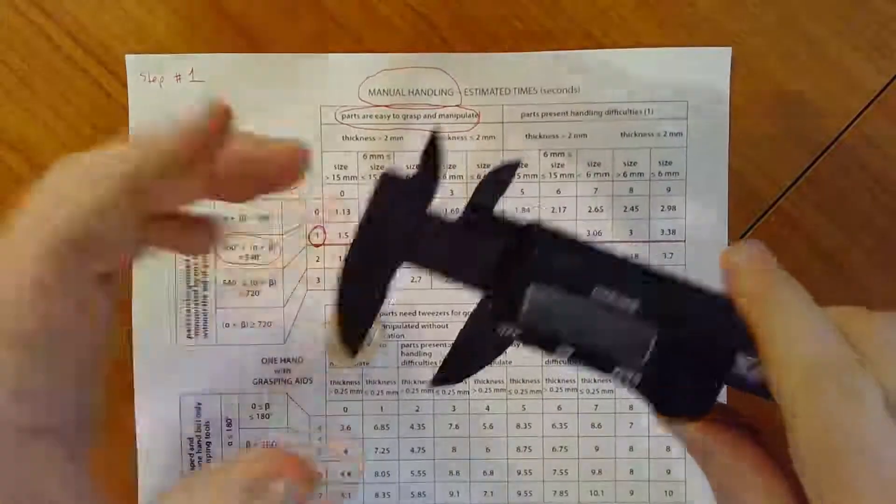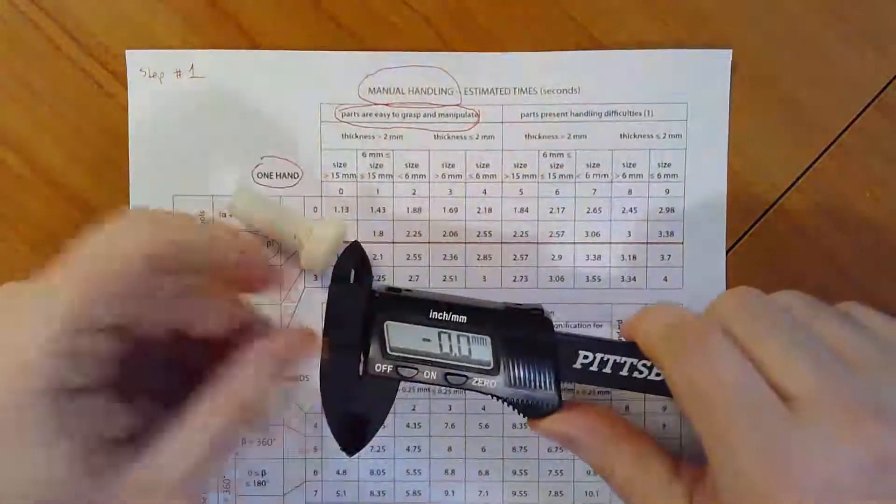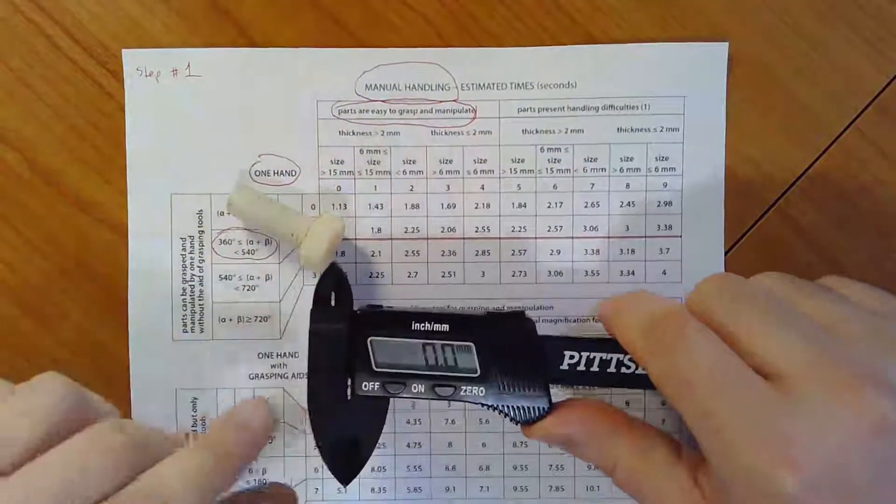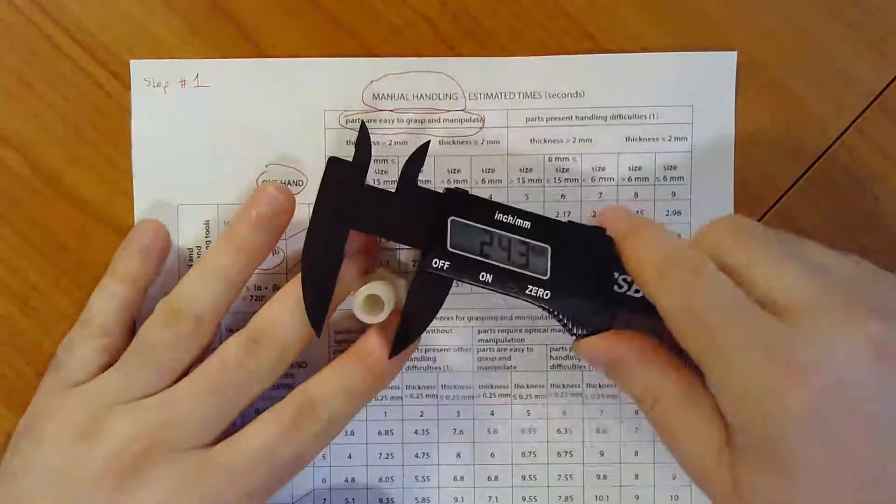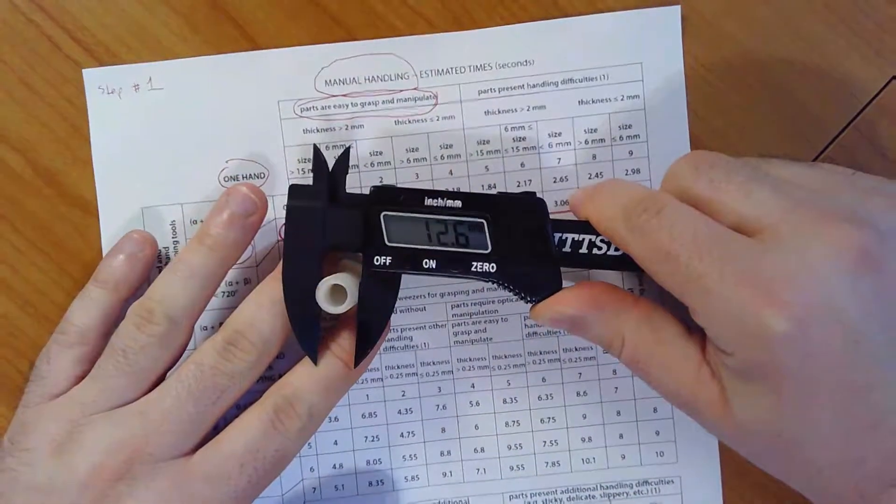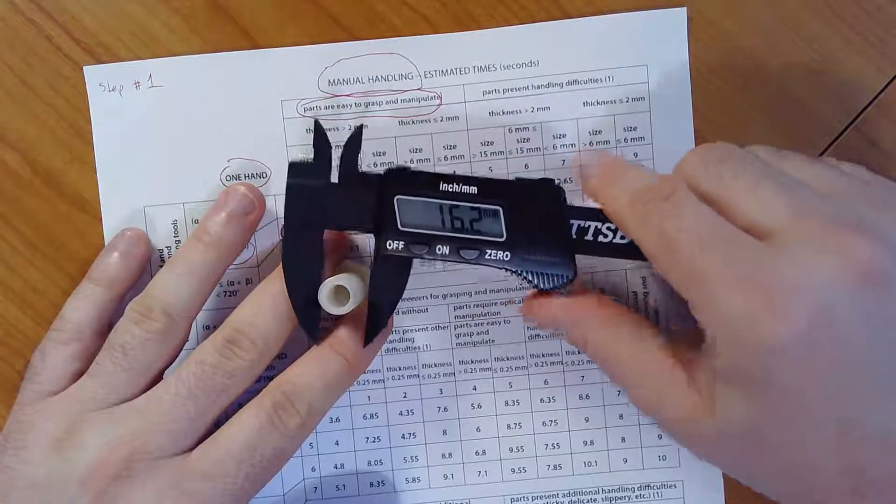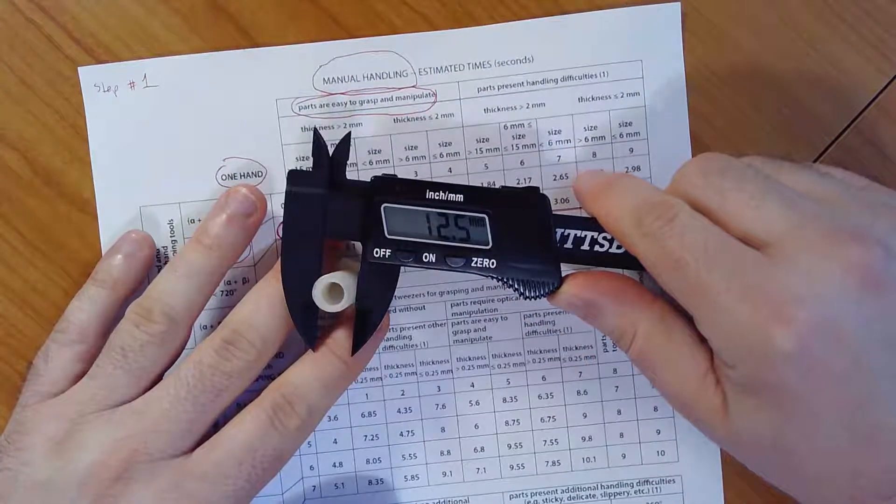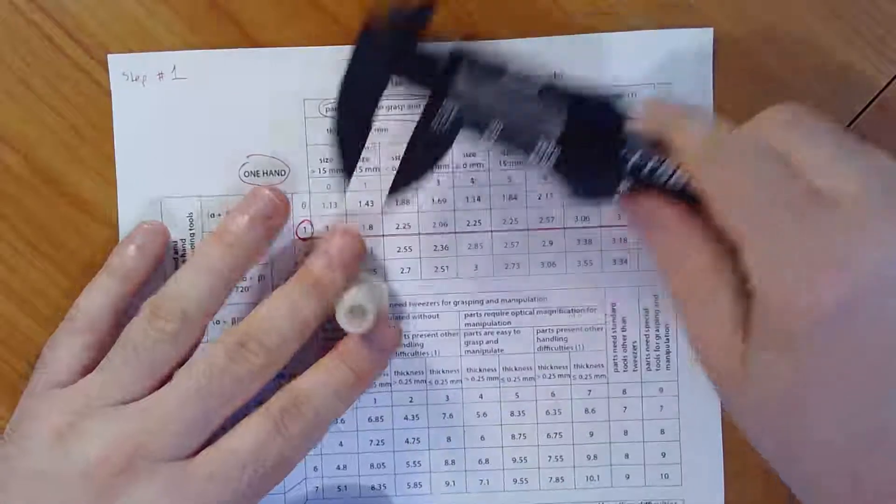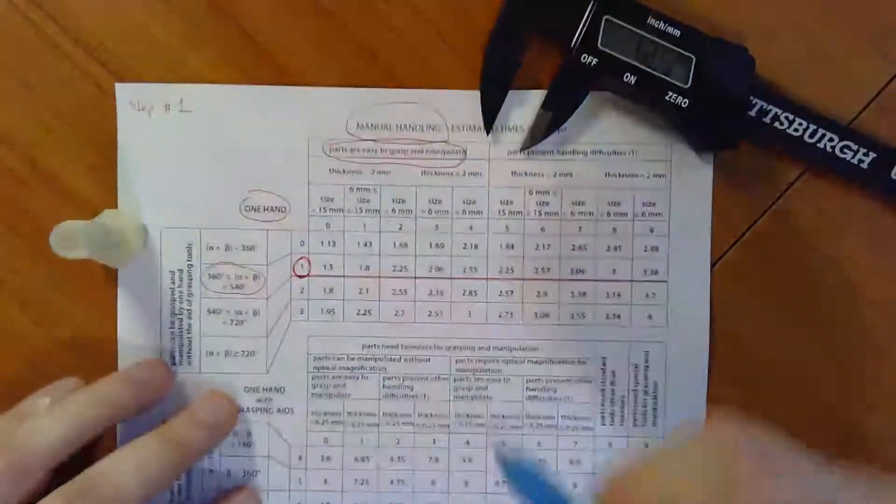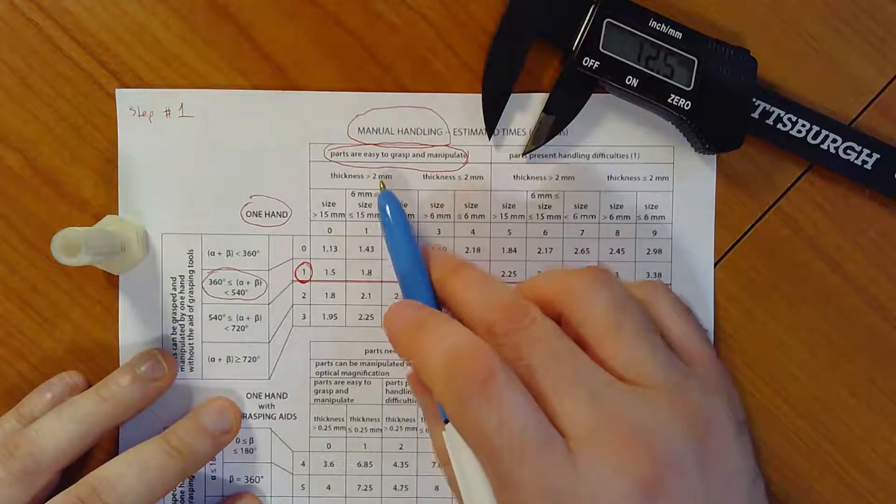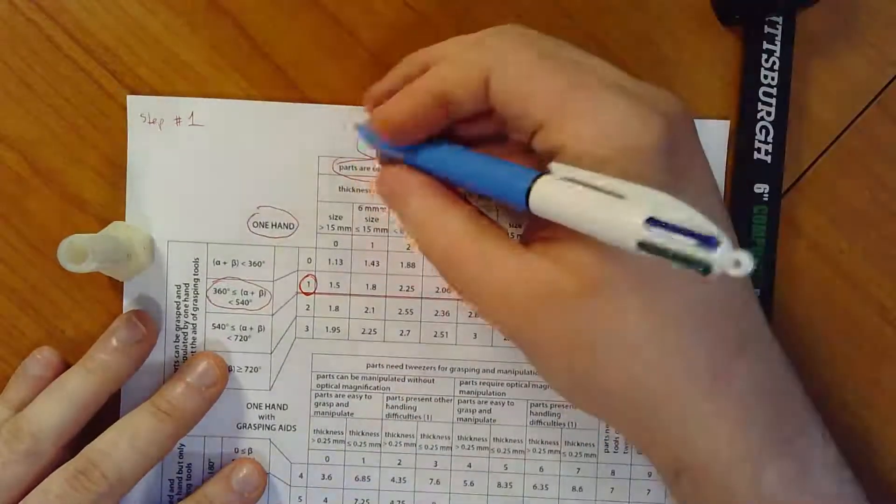And so let me turn on my calipers. Let me make sure that they're zeroed, set to metric. Okay, cool. So we'll put it in here and it looks like twelve point six millimeters. Well, that's not across the threads. There we go. Twelve point five millimeters, which is, of course, thicker than two millimeters. And so I'm going to circle this guy, which puts me into one of these three columns.